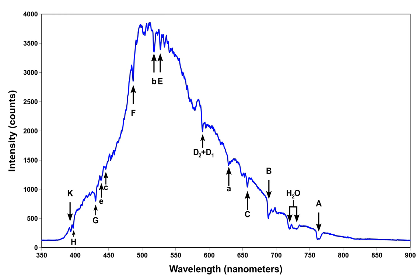These can be compared to previously collected spectra of atoms and molecules, and are thus used to identify the atomic and molecular components of stars and planets, which would otherwise be impossible.